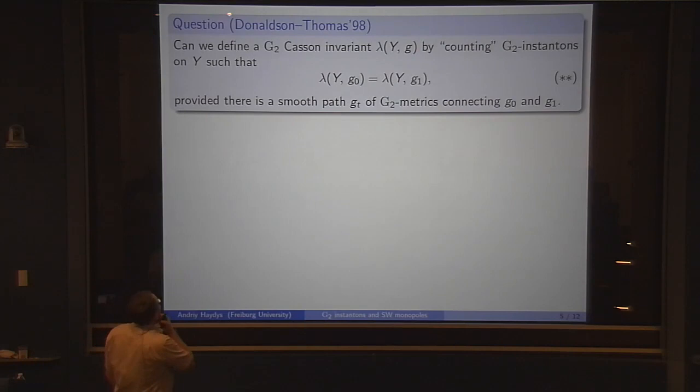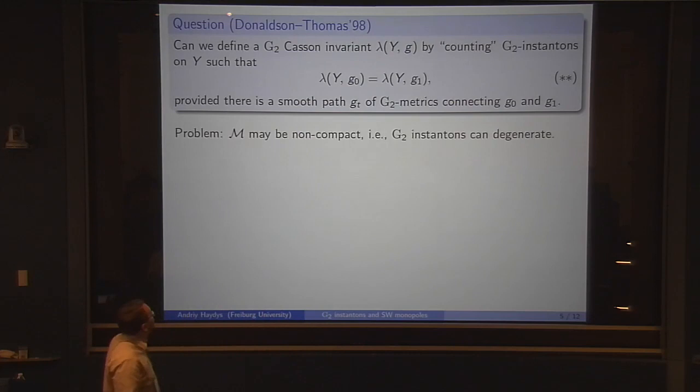A question due to Donaldson and Thomas is: can we define a Casson-type invariant lambda associated to a G2 manifold by counting G2 instantons on Y? The properties we want to ask for is that if you can connect two G2 structures by a family, a one-parameter family which should be generic, then the value of the invariant should be the same.